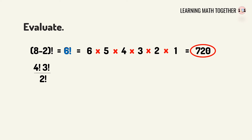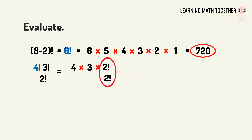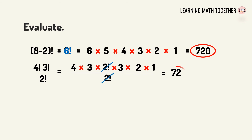Here's another example: we need to get the quotient of 4 factorial times 3 factorial divided by 2 factorial. We copy 2 factorial in the denominator, then expand 4 factorial as 4 times 3 times 2 factorial — stopping at 2 factorial so we can cancel it with the denominator. Then we expand 3 factorial as 3 times 2 times 1. After eliminating 2 factorial from numerator and denominator, we have 4 times 3 times 3 times 2 times 1, which equals 72.